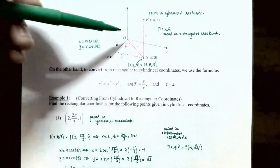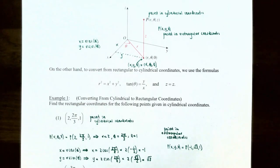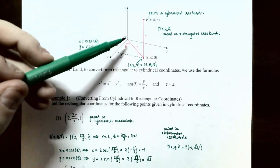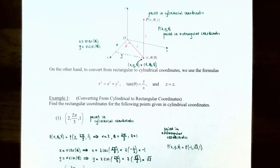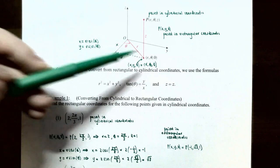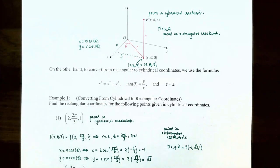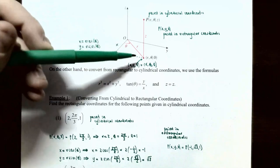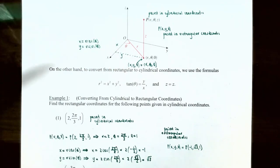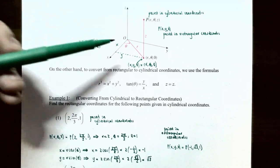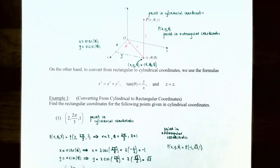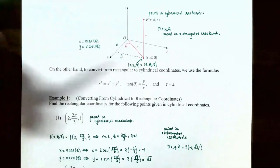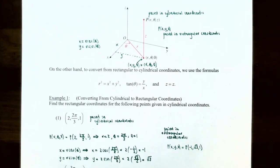In the xy-plane, r and theta are determined the same way as in polar coordinates. r is the directed distance from the origin to point P in the xy-plane, where the point has z-coordinate zero, and theta is the angle between the positive x-axis and ray OP. Because a right triangle is formed in the xy-plane, x equals r cosine theta and y equals r sine theta. z is the directed distance from the xy-plane to the point, so the cylindrical coordinate for point (x, y, z) is (r, θ, z).